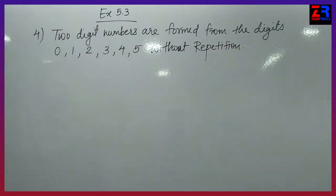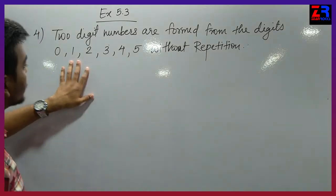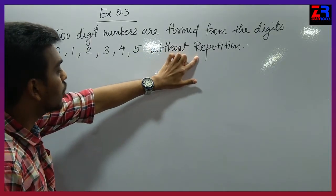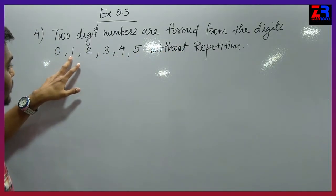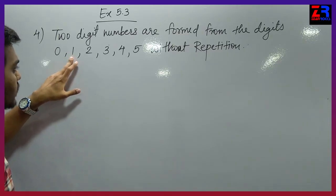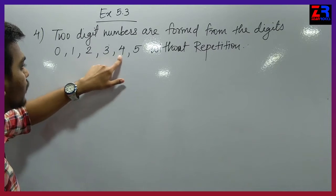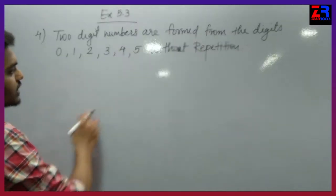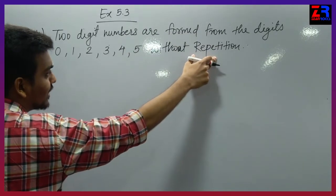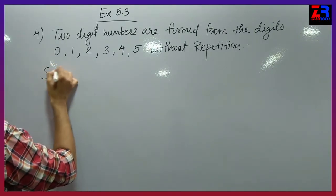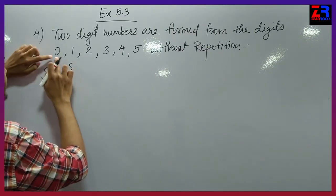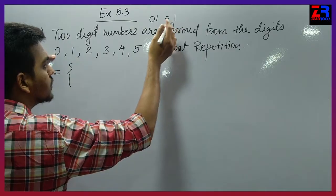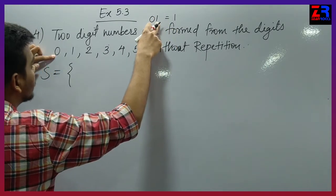Two-digit numbers are formed from the digits 0, 1, 2, 3, 4, 5 without repetition. Without repetition means we can't make numbers like 11, 22, 33, 44, 55. These are two-digit numbers, but the condition is without repetition — we can't repeat the digit. So now we build the sample space.